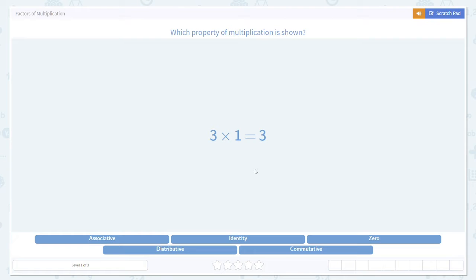They give us this equation 3 times 1 is equal to 3. Down at the bottom you can see we have several different properties of multiplication. Which one of these is being shown in this problem? This is an example of the identity property. The identity property says that a times 1 is equal to a. Any number multiplied by 1 is that original number. That's what we're seeing here.